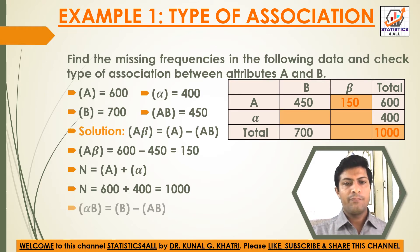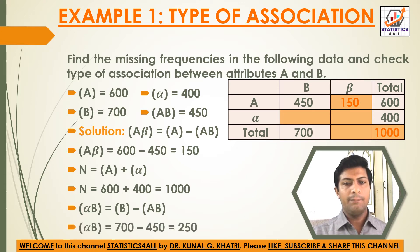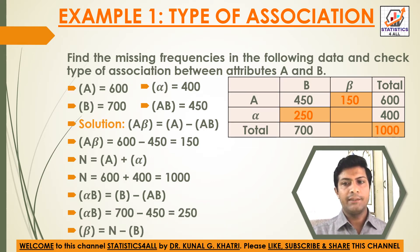Now after finding N, we will find alpha_B. Alpha_B is equal to B minus AB. Here B is equal to 700 and AB is equal to 450, so alpha_B is equal to 700 minus 450, which equals 250.